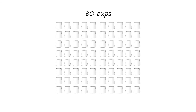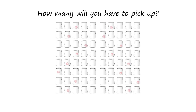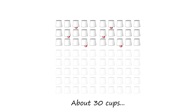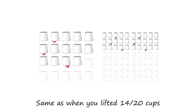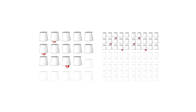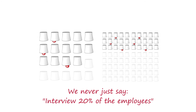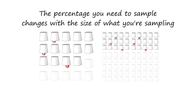So let's set the game up with 80 cups — again, 20% are hiding a ball. How many will you have to pick up before you will be able to guess a number of balls close to the real answer of 16 balls? The real answer is that once you've lifted about 30 or so cups, your chances of making a reasonable guess are about the same as when you lifted 14 of the 20 cups in the previous experiment. That's why when it comes to sampling, we never just say look at 20% of the records or interview 20% of the employees. The percentage you need to sample changes with the size of what you're sampling.